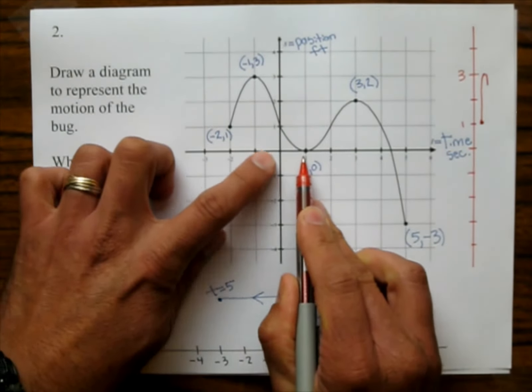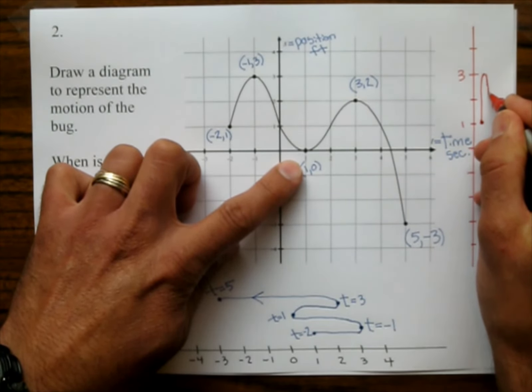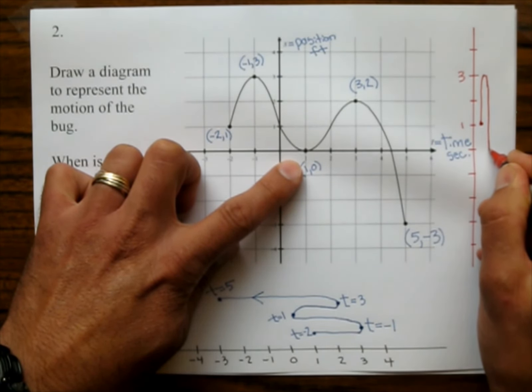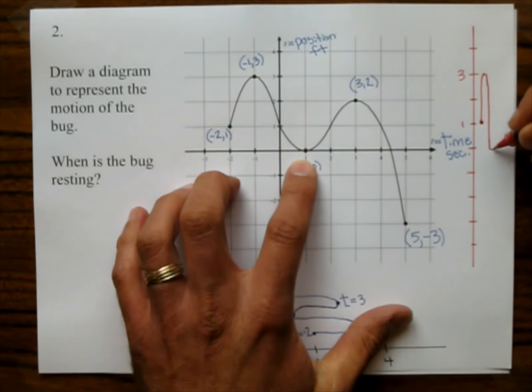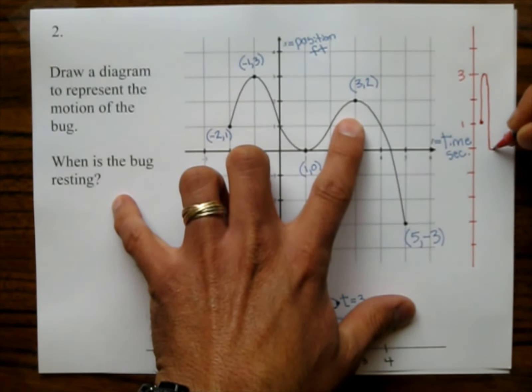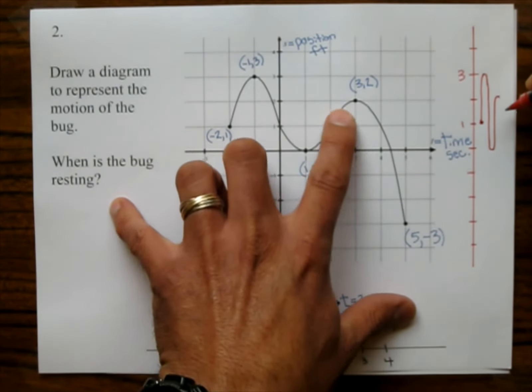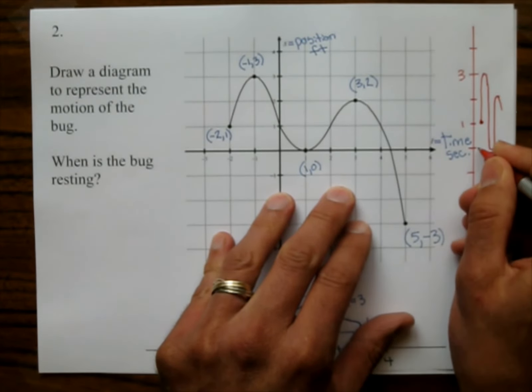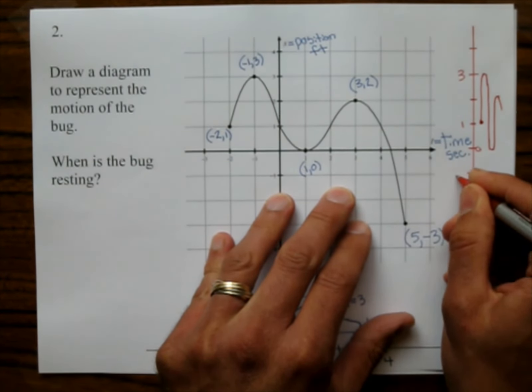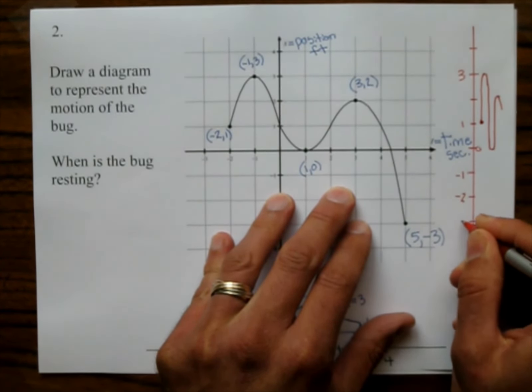We go all the way down to sea level. To altitude 0. And then we turn around. And we go to altitude 2. Or the height of 2. And then we turn around. And go all the way to the altitude of negative 3.